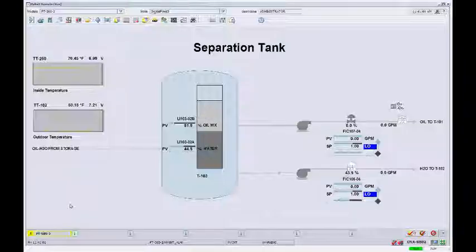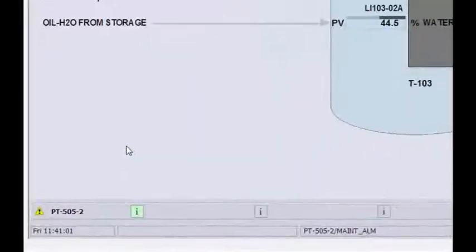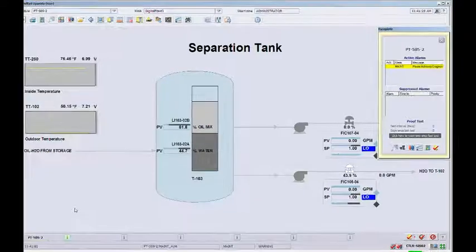When the 3051S detects wiring corrosion or other connectivity problems, it sends a PlantWeb alert to the logic solver using the HART protocol. Because DeltaVSIS has HART integrated I/O, the alert is visible on the DeltaV alarm banner.